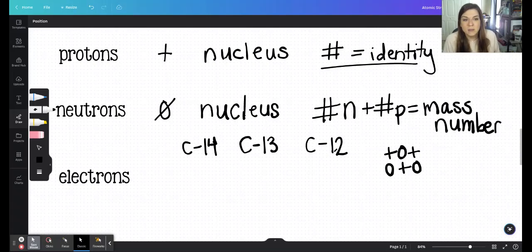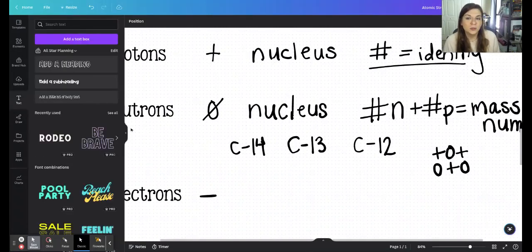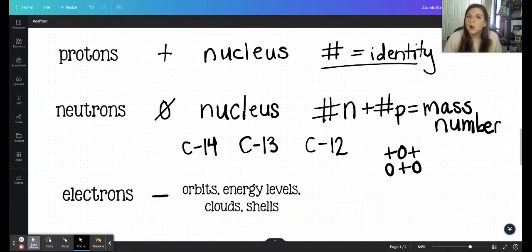So that is the mass number, the 12, 13, and 14. It's really just telling us the number of things in the nucleus. Finally, we're looking at electrons. And electrons will have a negative charge, and they are found in quite a few places. They can be found in orbits, energy levels, clouds, or shells.